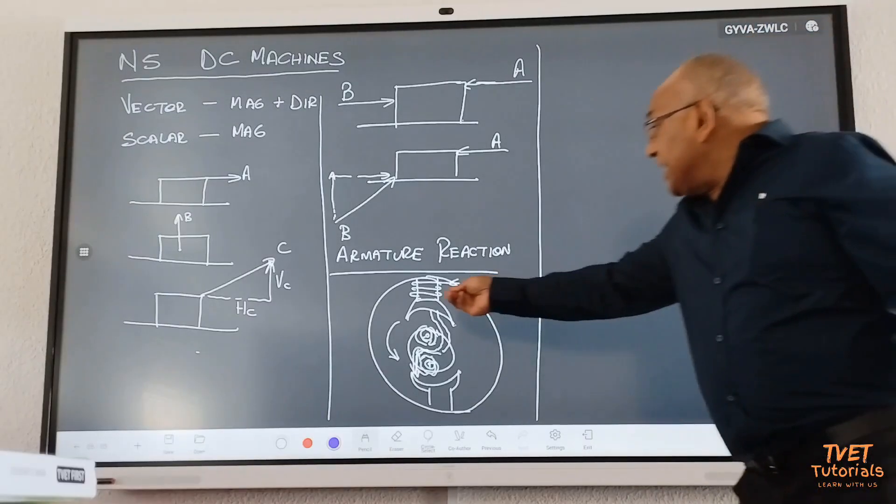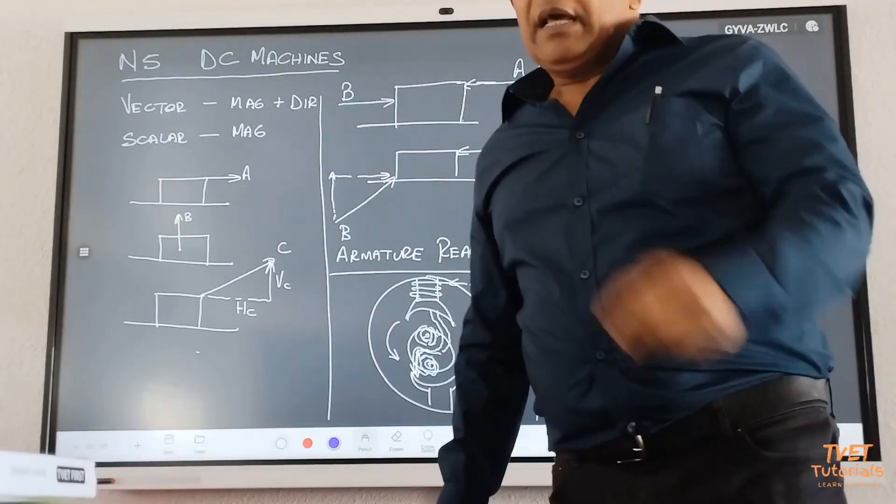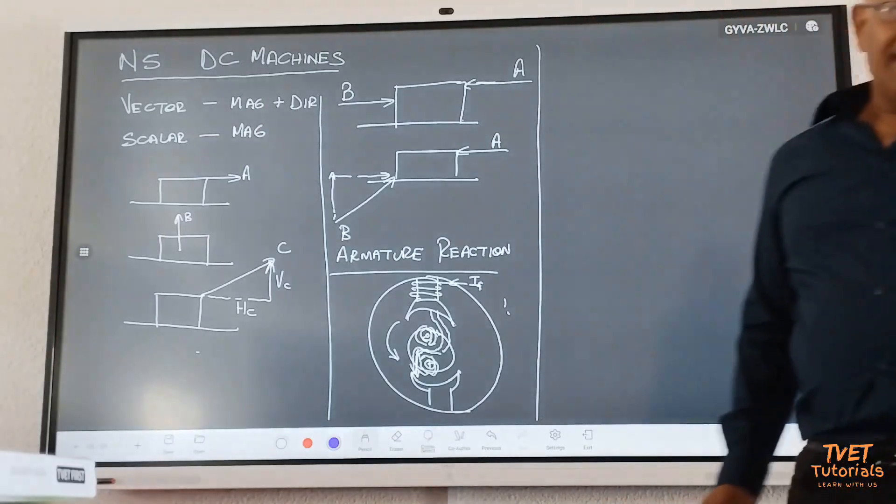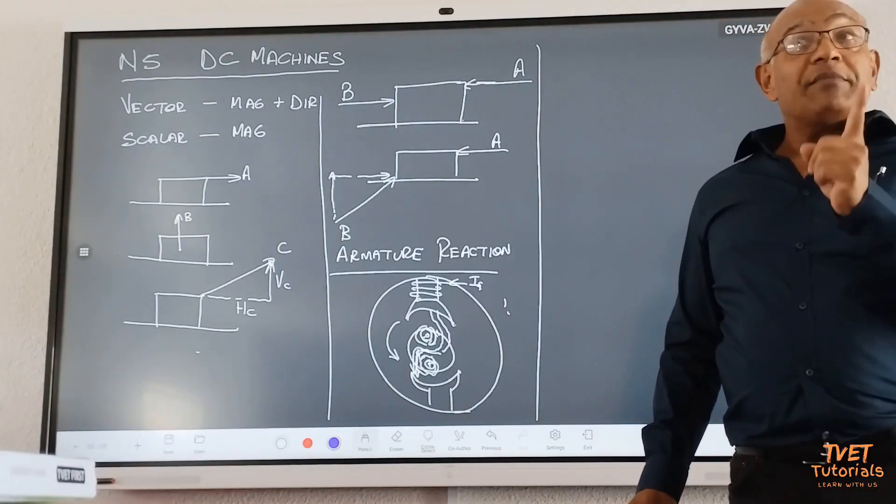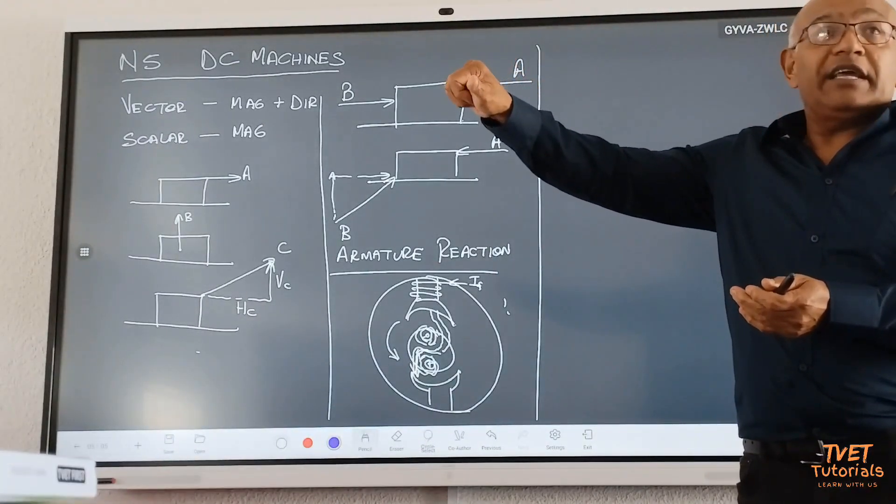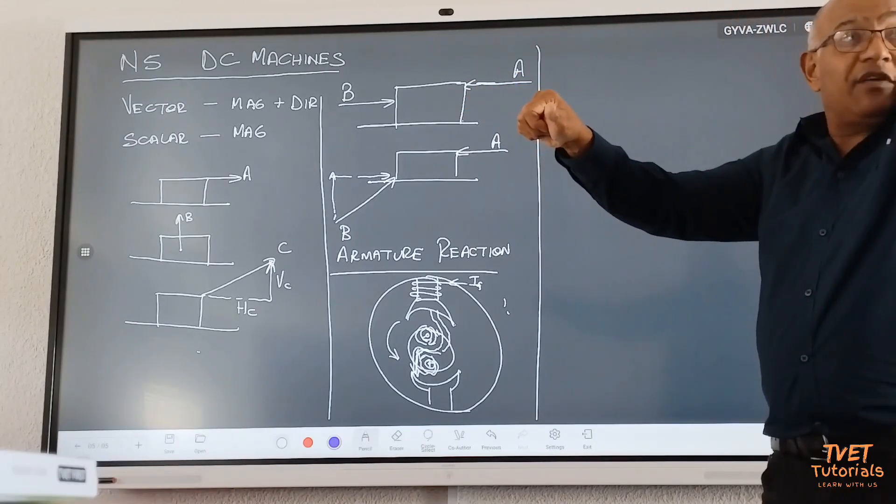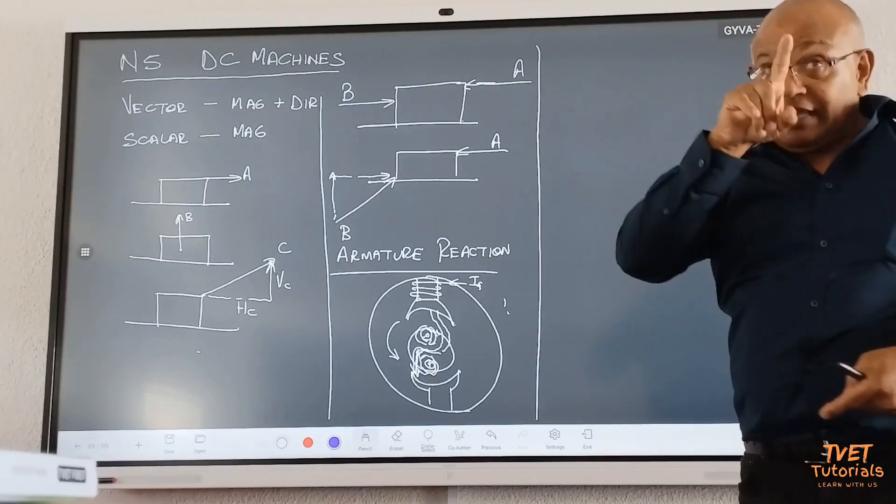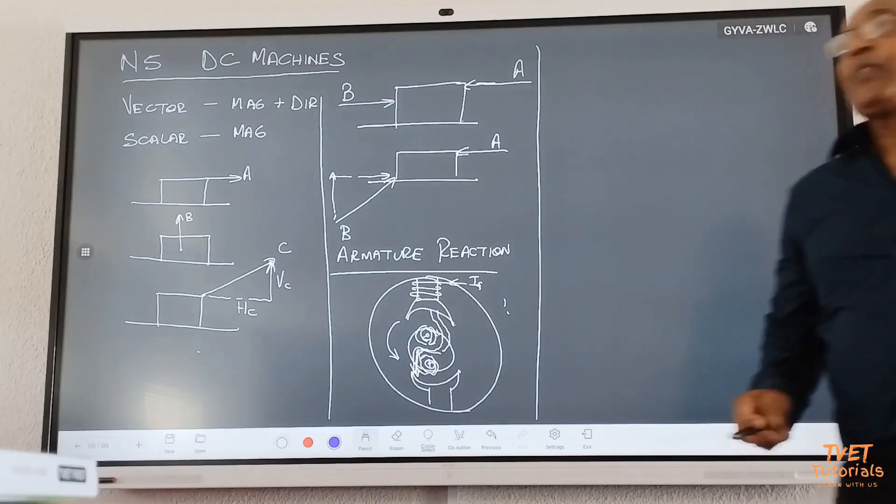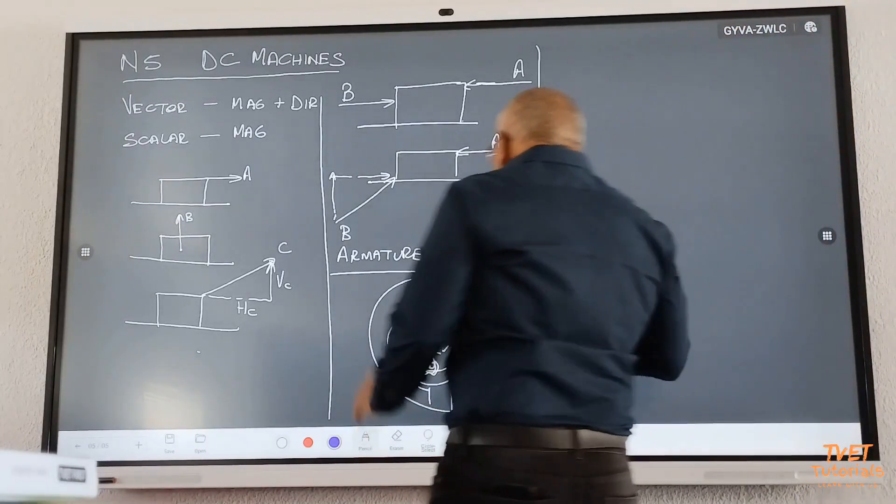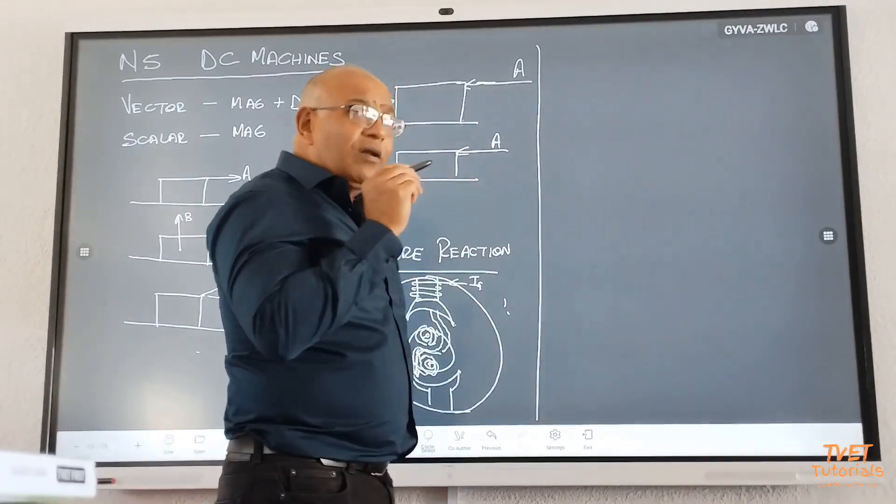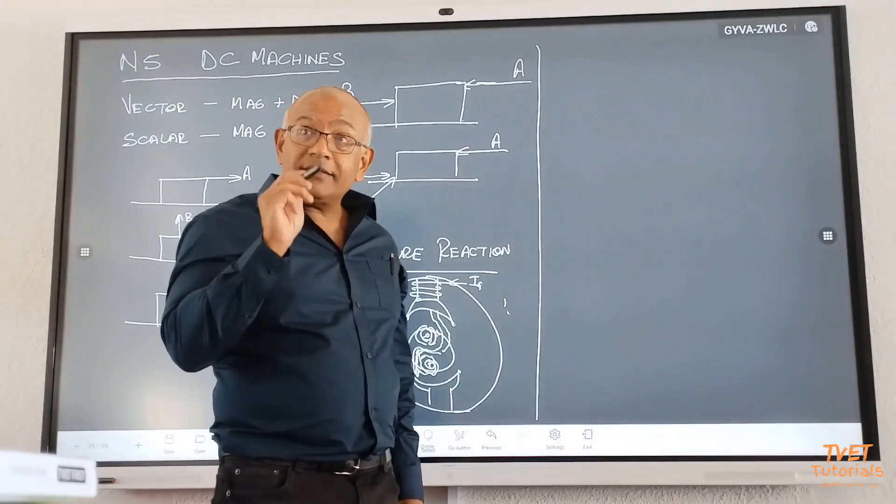Now, these are magnetic lines of flux. Are they vector quantity or scalar quantity? Magnetic lines of flux always flow from the north to the south. Around a conductor, hold the conductor in your right hand. If the thumb points in the direction of the current, then the magnetic field is? Is it vector or scalar? Vector quantity. It has magnitude and direction. So, therefore, we are coming to a very, very difficult concept.